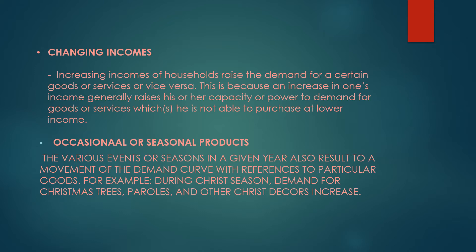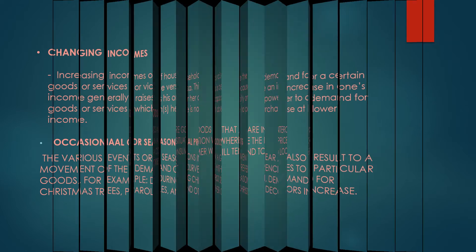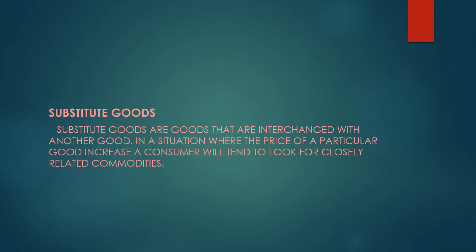The various events or seasons in a given year also result in a movement of the demand curve with reference to particular goods. For example, during the Christmas season, demand for Christmas trees, parols, and other Christmas decors increases. Regarding substitute goods — substitute goods are goods that are interchangeable with another good. In a situation where the price of a particular good increases, a consumer will tend to look for closely related commodities.